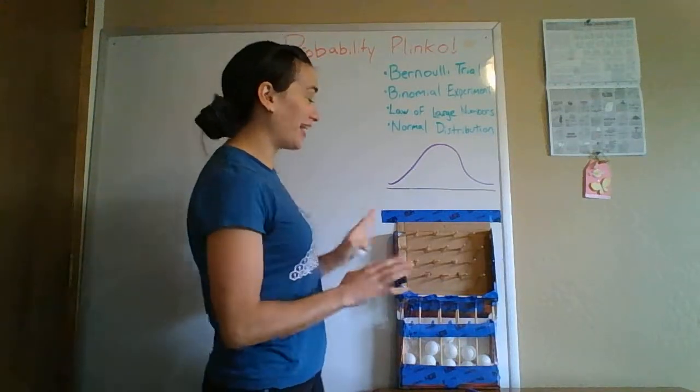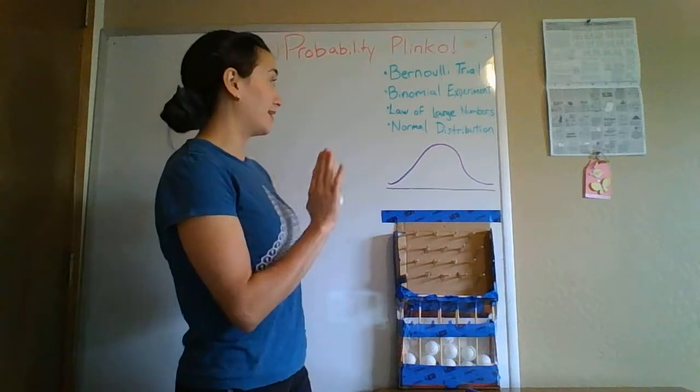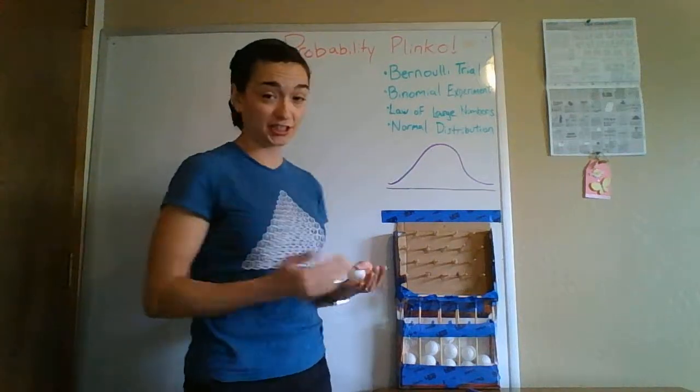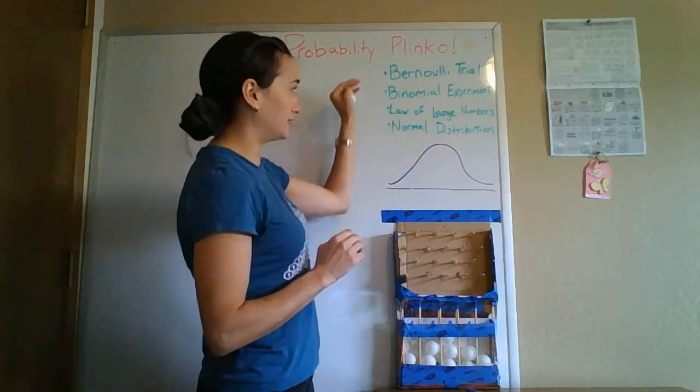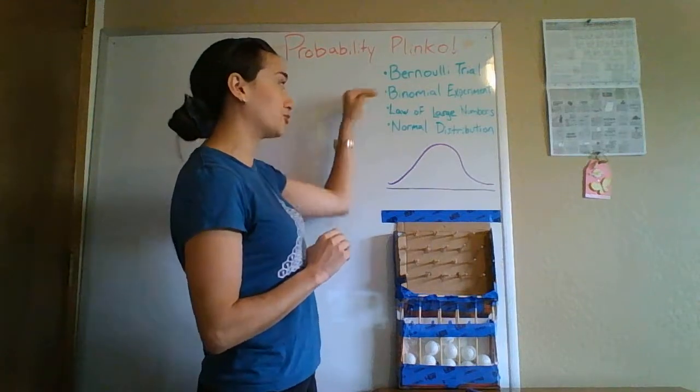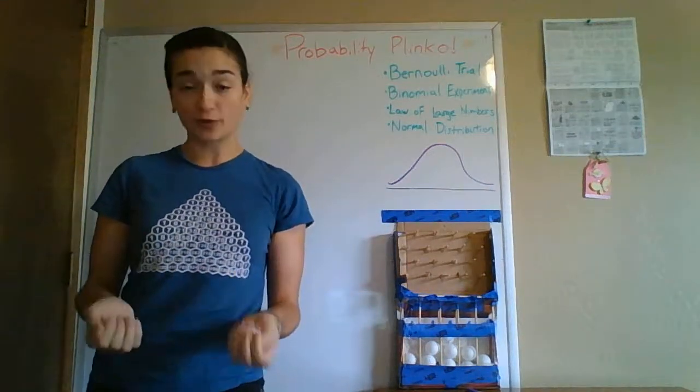But, the cool thing is, if I had 10,000 ping pong balls, my credibility would be much larger than just 10. The law of large numbers says that when you repeat a Bernoulli trial into a binomial experiment, when you repeat it a large number of times, your outcome is more credible.